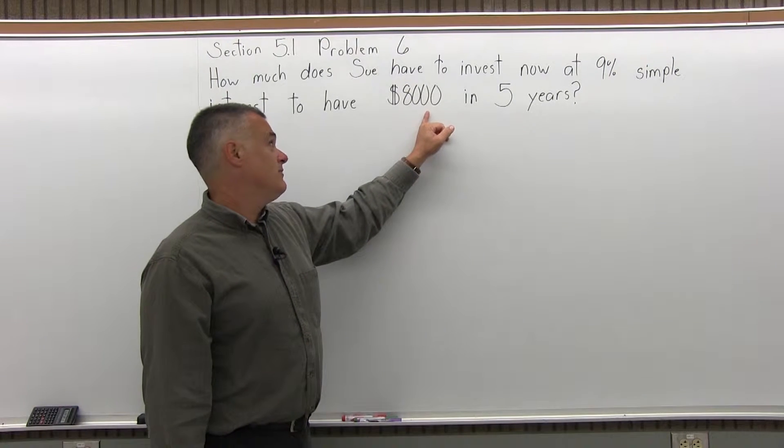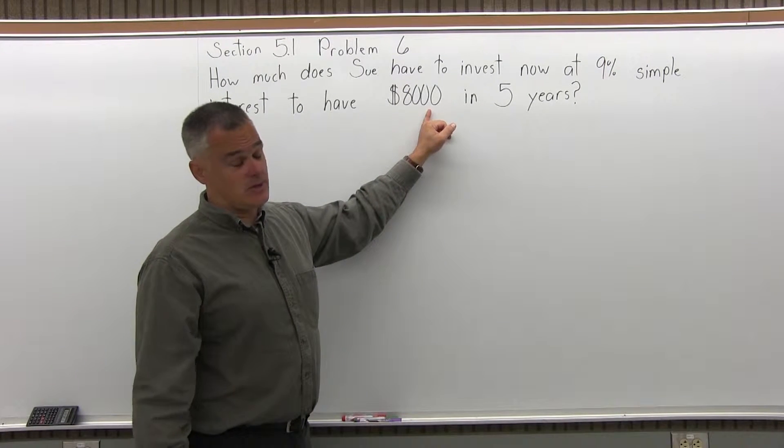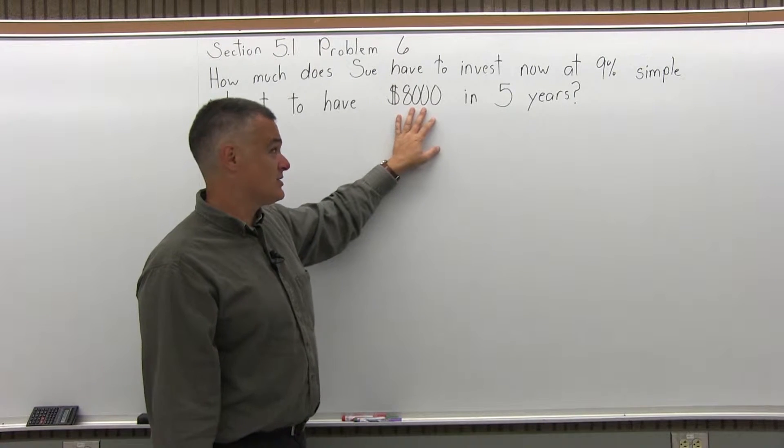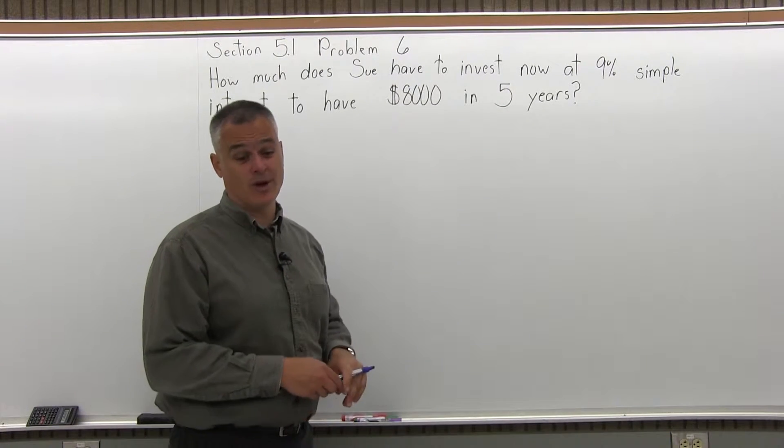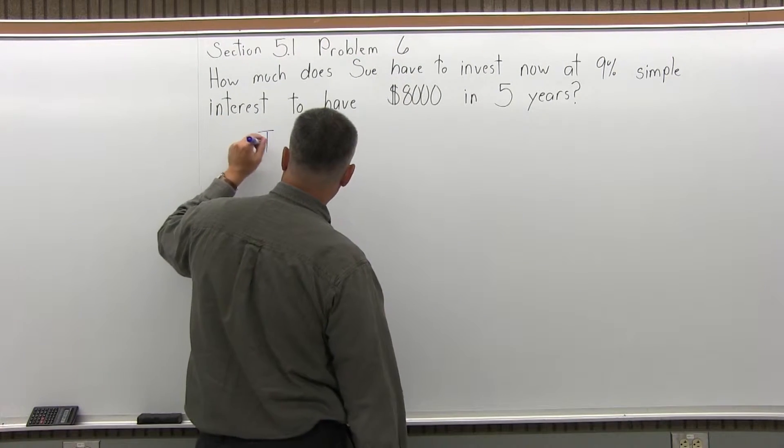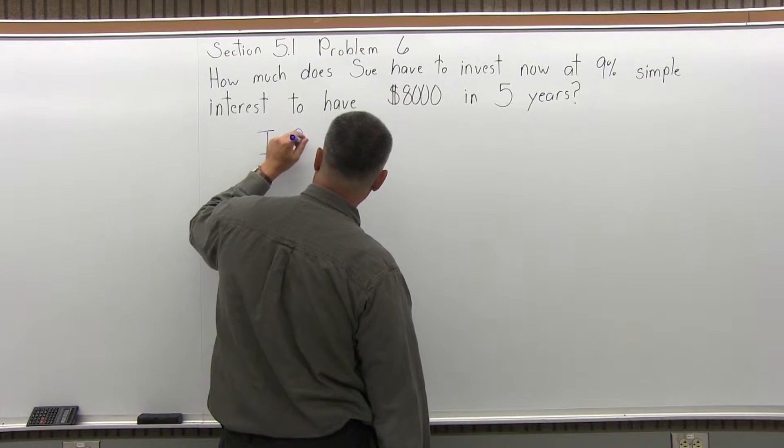So if you get an answer of say $9,600, well that must be wrong. If you invest $9,600 now and it goes to $8,000 in five years, something went wrong. So anyway, because it says simple interest, I'm going to use the simple interest formula I equals PRT.